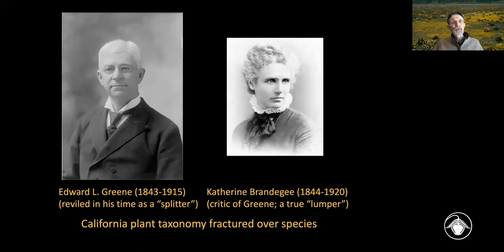That's basically what was available to botanists traditionally. People were basing their judgments about what constitutes one taxon versus another using judgment calls, and the opinions of individuals who knew a lot about plants were often the basis for how plants were classified. A great example is late 19th century California plant taxonomy, where different knowledgeable individuals could have very different interpretations of what constitutes a species.